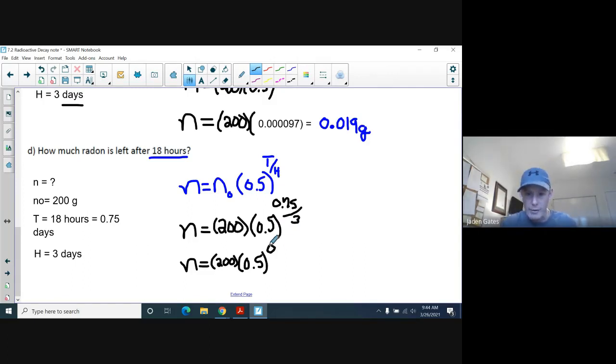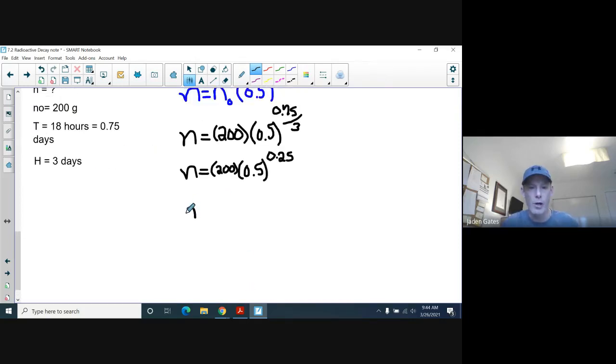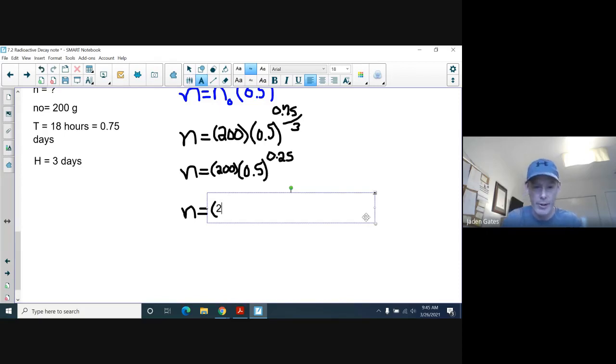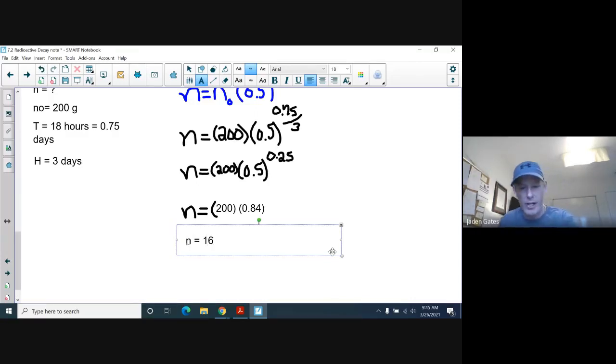And, again, I have an exponent. That's what I want to do now. So, I'm going to take my 0.5, I got my 200 here first, times my 0.5 to the power of 0.25. And I get, again, to two decimal places, 0.84. And then, so, finally, a leftover amount. Now, again, the half-life is three days. And we're only talking about 18 hours has gone by. So, it's got to be more than half. And, of course, if I take 200 and I multiply it by 0.84, I end up with 168 grams.